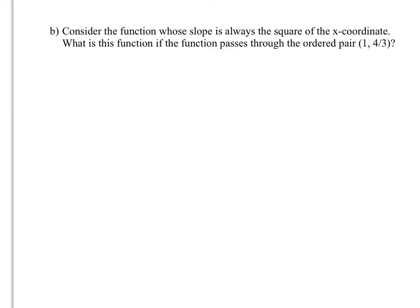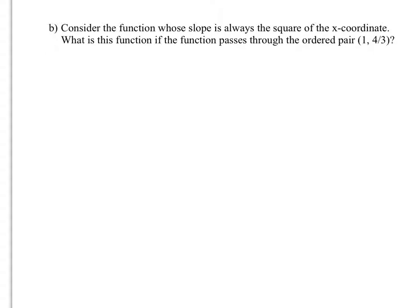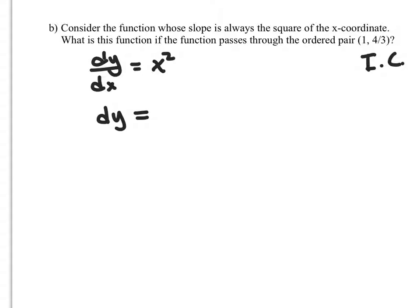Consider the function whose slope is always the square of the x-coordinate. What is the function if it passes through this ordered pair? So this is our initial condition like we talked about in our last lesson. So dy/dx is always the square of the x-value, x-squared. Like we did before, we're going to multiply both sides by dx. Therefore, we get x-squared dx, and then it's integration time.